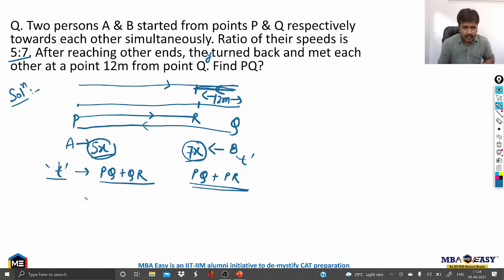So, if I equate for time. Time is distance by speed. So, the distance is PQ plus QR upon speed 5X. This is same as PQ plus PR divided by 7X. You should always keep in mind in time, speed, and distance questions, identify which variable is constant. Time of travel is constant. Then time of travel can be equated from two places. As we are doing here, distance upon speed, distance upon speed, both are equal for person A and B.